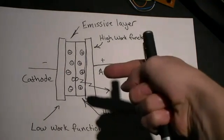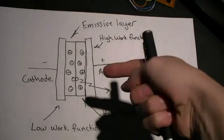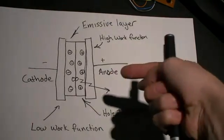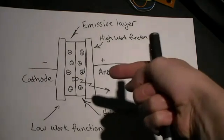For the anode, we'll use a high work function, which is more likely to accept electrons than give electrons. It will be the transparent conductor indium tin oxide on glass.